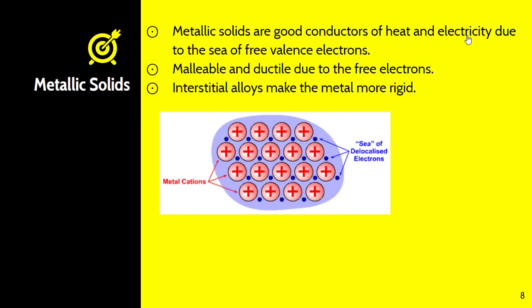Metallic solids are good conductors of heat and electricity due to the sea of delocalized valence electrons, which makes them malleable and ductile. When we make alloys, the purpose is to make them stronger. The atoms located between the metal atoms make the metal more rigid. There's less room for metal atoms to move around if there are other atoms in between them. This makes metal more rigid as an interstitial alloy.